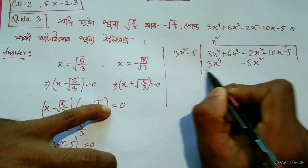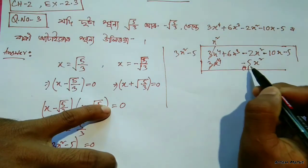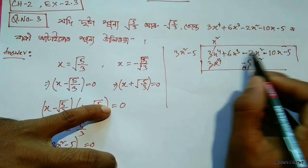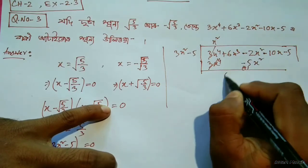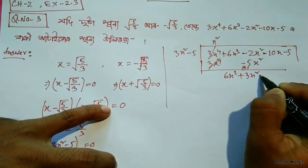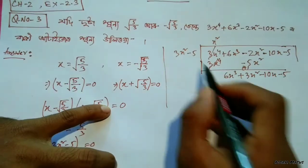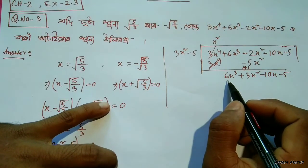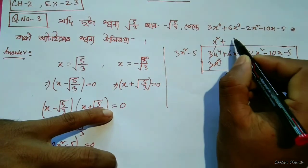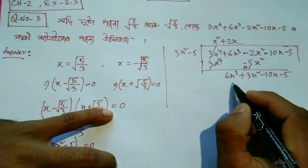Minus 5x squared for 4, it will be as much as cube. X square and x square — it will cancel. It will be plus or same, it will be less than minus. 6x cube, plus 3x square minus 10x, it will be as much as 3x square. 6x cube, yes.